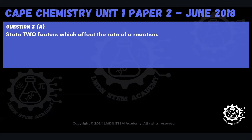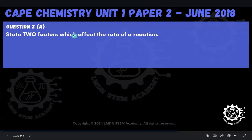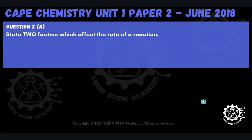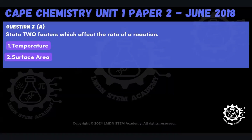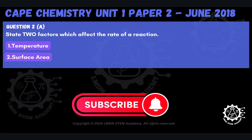This question is asking us to state two factors which affect the rate of a reaction. Two factors which affect the rate of a reaction are temperature and surface area. We could have also included concentration, pressure, and catalyst as well, but I've just selected temperature and surface area here. So pick your favorite two, and we're good.